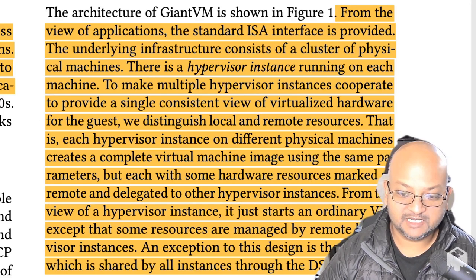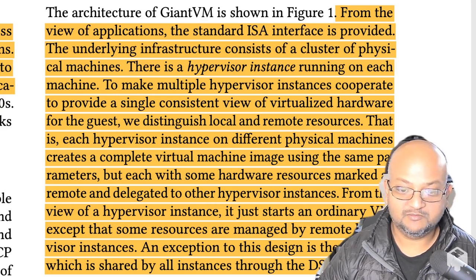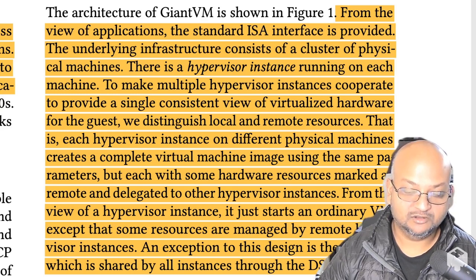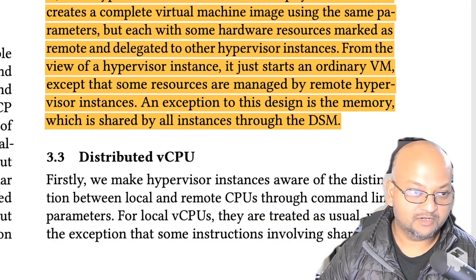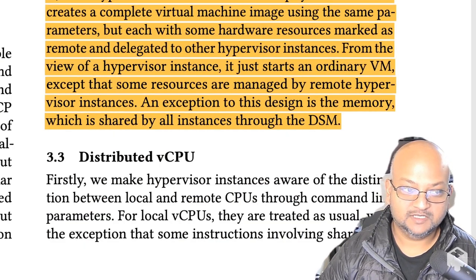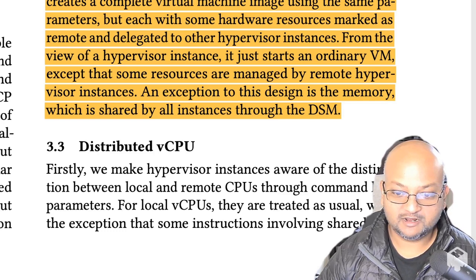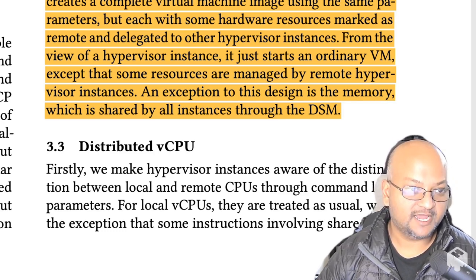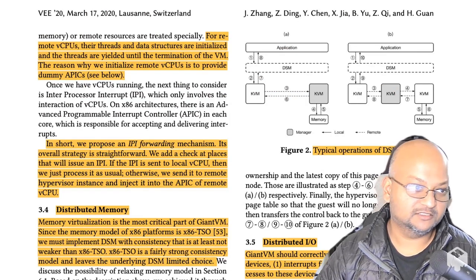The high-level architecture of Giant VM is that there is a hypervisor instance on each physical machine. Each instance creates a complete large virtual machine image using resources from a group of physical machines, and has marked those resources as either remote — in which case reads and writes get delegated — or local. From the point of view of the application running inside Giant VM, these are all just local resources. The exception to this local/remote dichotomy is memory, which is shared by all instances throughout Giant VM.